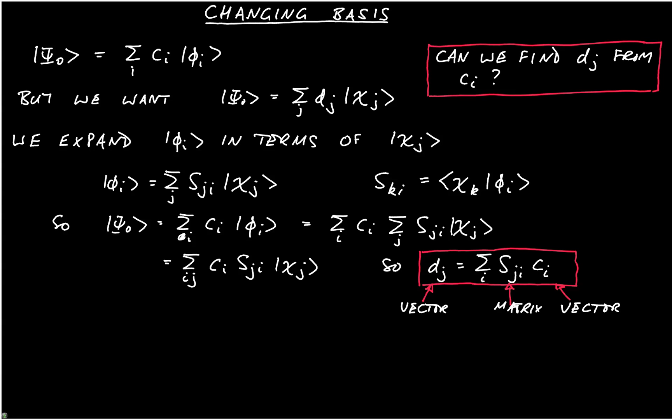Remember that what we're trying to do is we're trying to calculate the coefficients d from the coefficients c. And to do that, we use this matrix capital S, which is known as... So s_ji is known as a similarity transform.